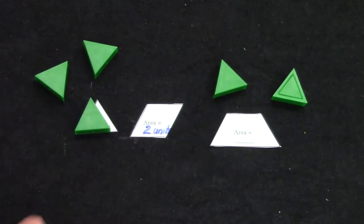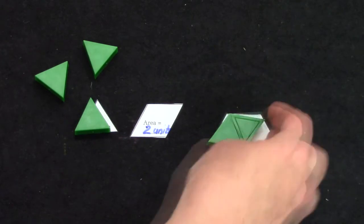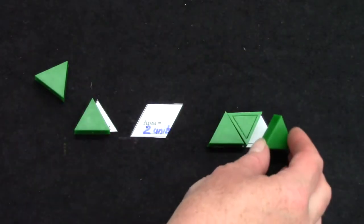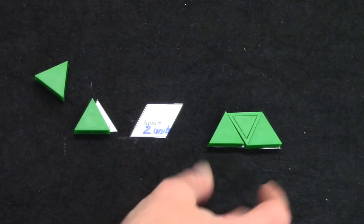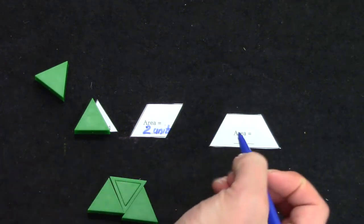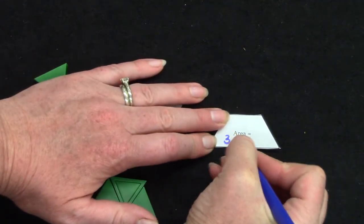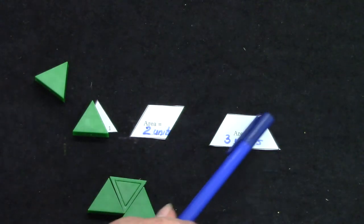All right, well what about this one here? I can try covering it with one, two, three. Three triangles or three units are the area. So I'm going to write down three units. Cover the whole area.